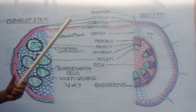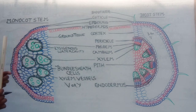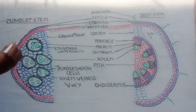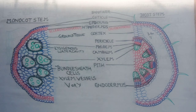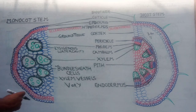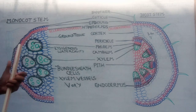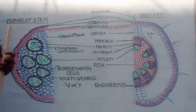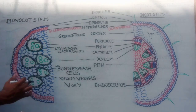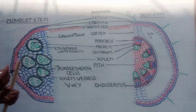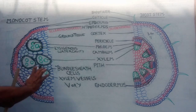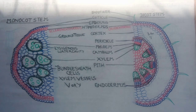In case of monocot stem, the protoxylem elements break down to form a water cavity, which is called a lysigenous water cavity, also called schizolysigenous in origin. The major portion of the water cavity is lysigenous. So in case of monocot stem, a lysigenous water cavity is present.